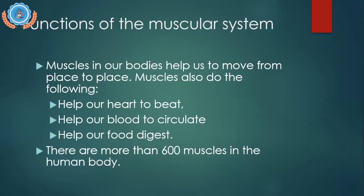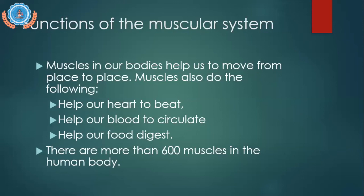Muscles in our body help us to move from place to place. They also help our heart to beat, help blood to circulate — muscles are found in our capillaries, veins, and arteries to push blood throughout the body. They help us to digest food — muscles are found in our esophagus, stomach, and intestines to make sure food is digested. There are more than 600 muscles in the human body.